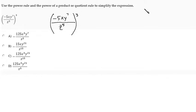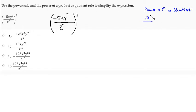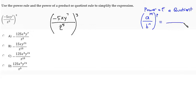The power of a quotient rule looks like this. When you have a quotient with one exponential expression in the numerator, a different exponential expression in the denominator, all raised to an outside power — call it p.